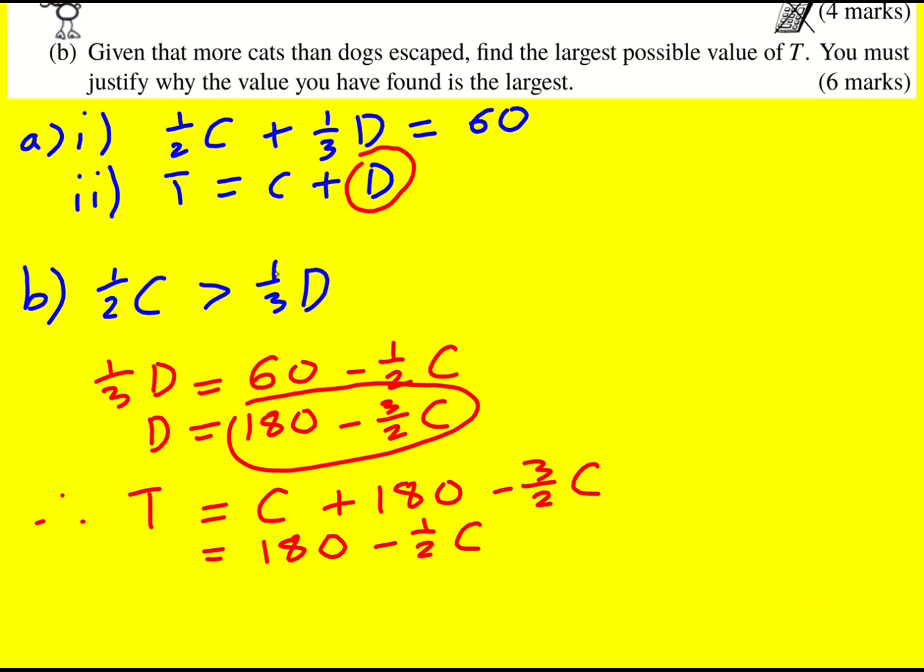So we're going to be using both of these. It can't actually be 180 because that will be when you have zero cats, and you have to have that half the number of cats is greater than a third of the number of dogs, because that was, remember, these were the numbers of each that escaped.